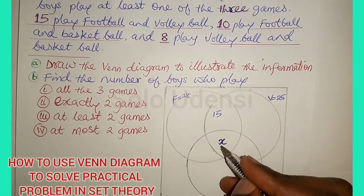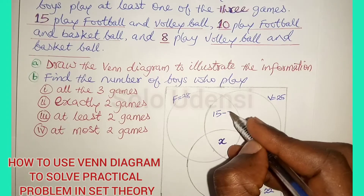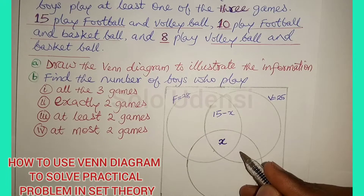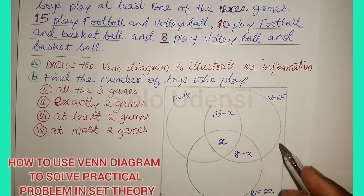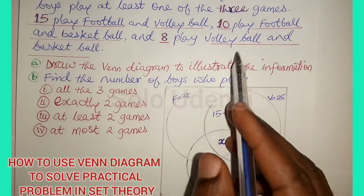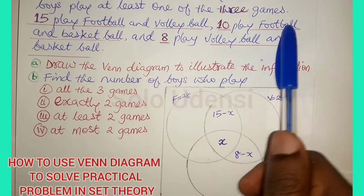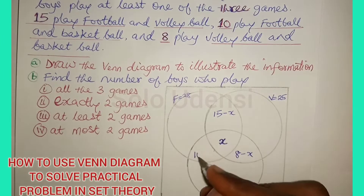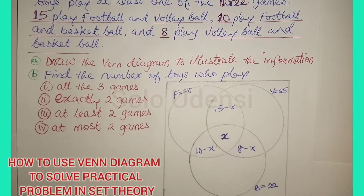Let X represent the number of boys playing all three games. So here will be 15 minus X for football and volleyball only. Here will be 8 minus X, since 8 people play volleyball and basketball. And here will be 10 minus X, since 10 people play football and basketball. That is how the Venn diagram will look.